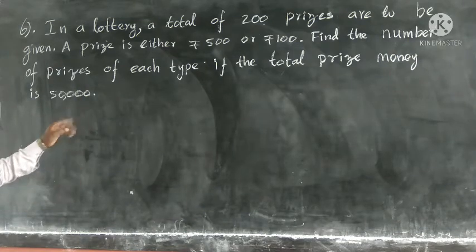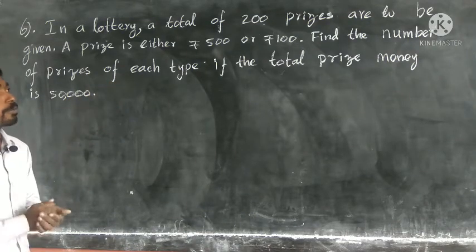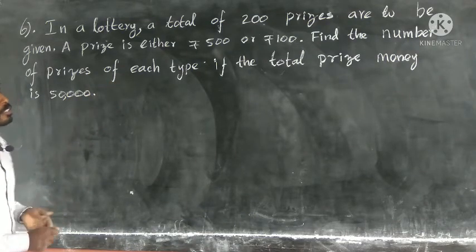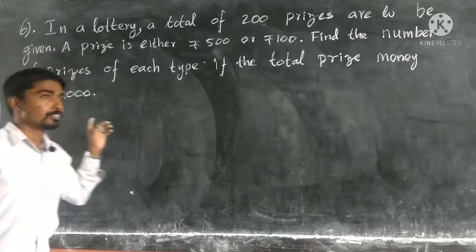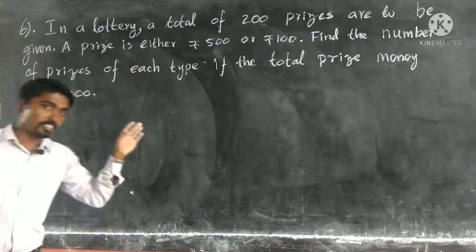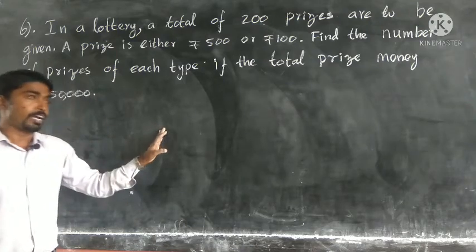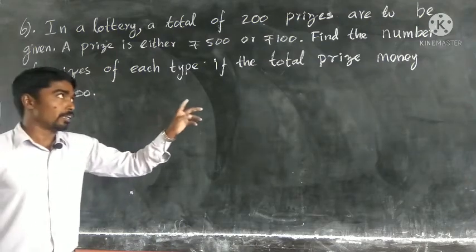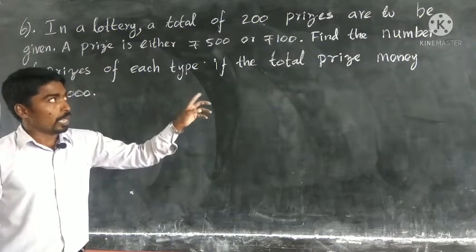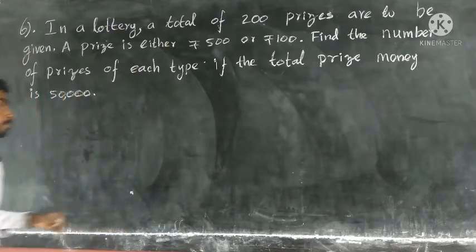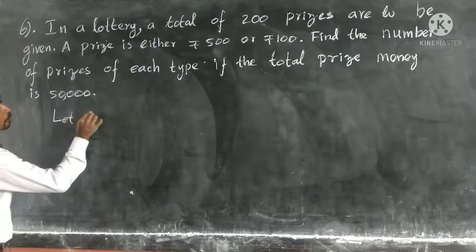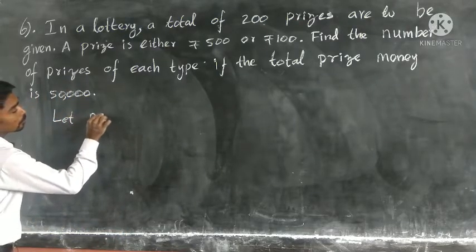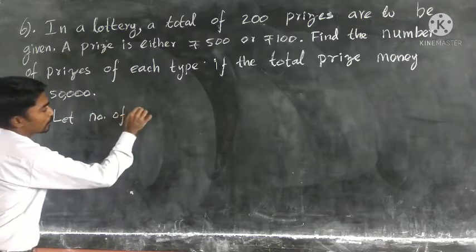This question is given. Total number of prizes is 200 and total prize money is 50,000. By using this data we are going to find the number of 500-rupee prizes and the number of 100-rupee prizes. Let the number of 500-rupee prizes be x.